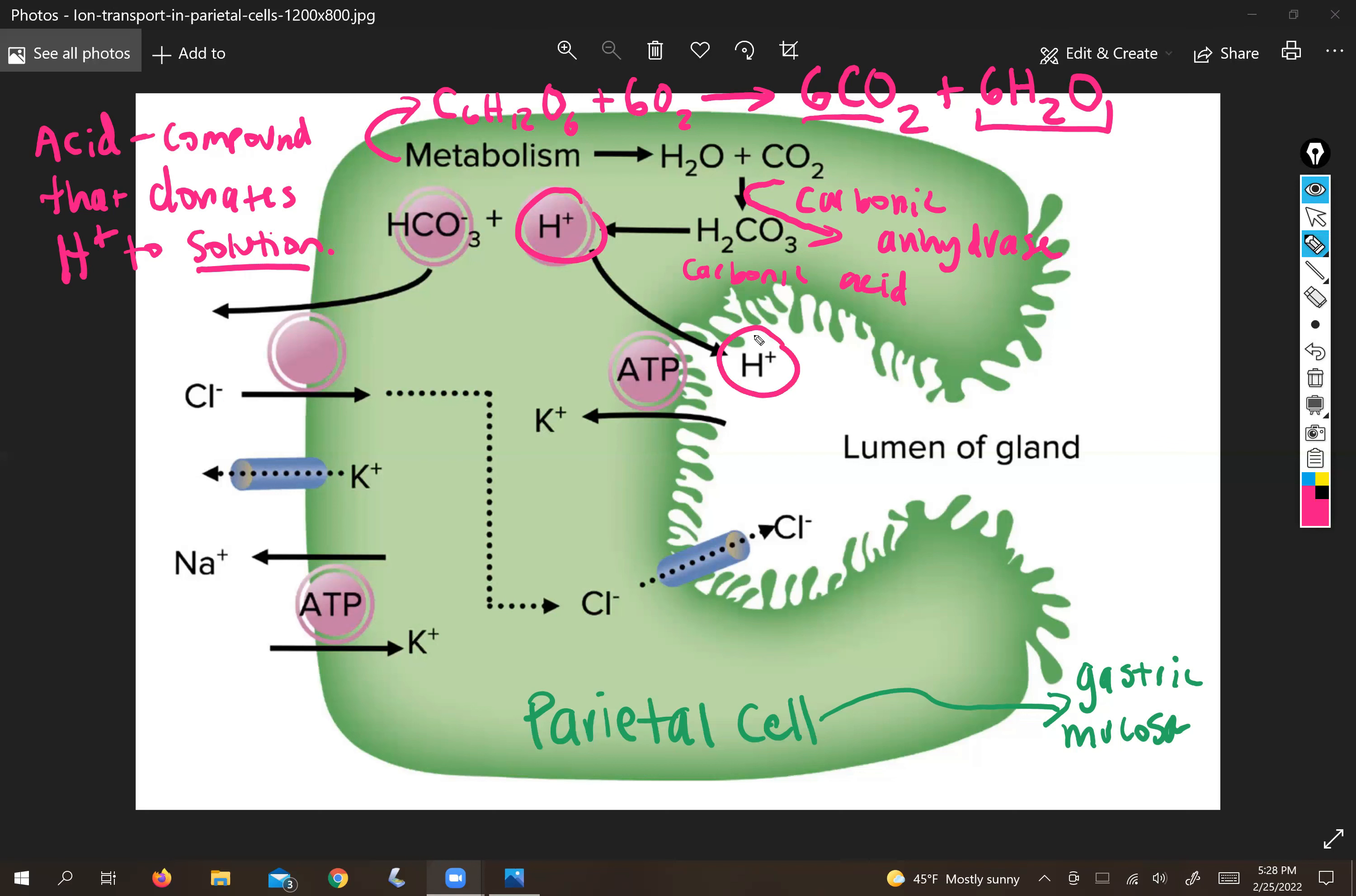So we're going to go ahead and put our proton out here in the water that is in the stomach lumen. But remember, the job of parietal cells is to produce hydrochloric acid, not just protons.